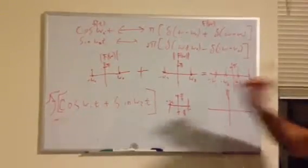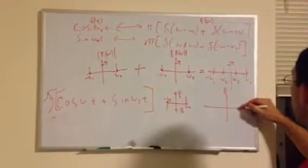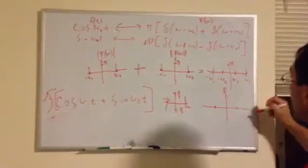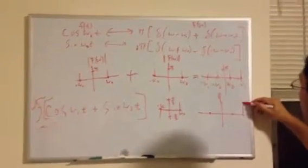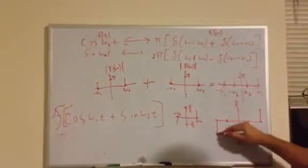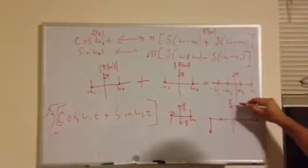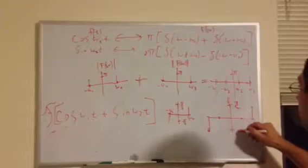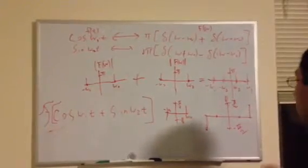Now, for the phase, cosine, there's no phase shift. Sine, phase shift here, here. Pi over 2, negative pi over 2.